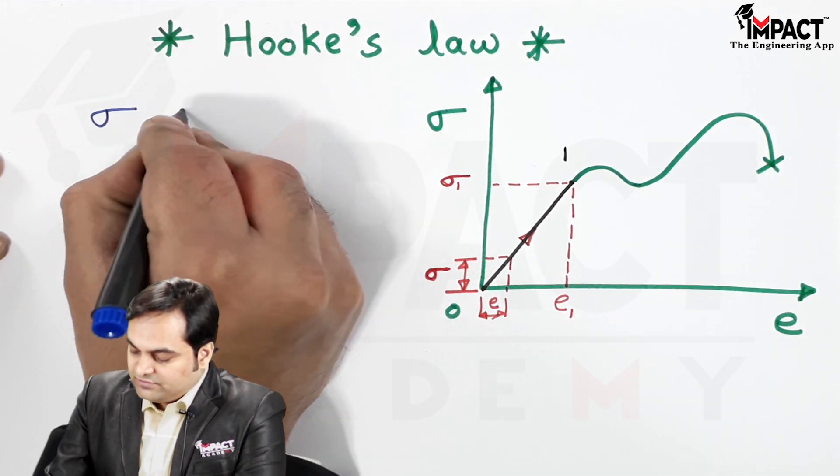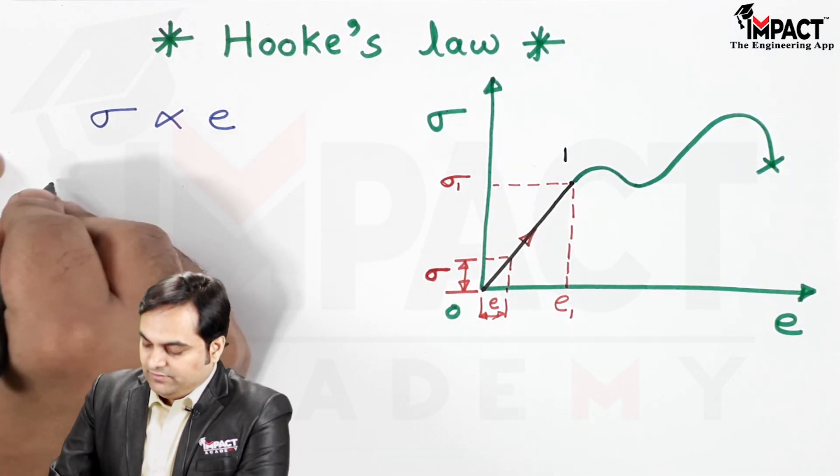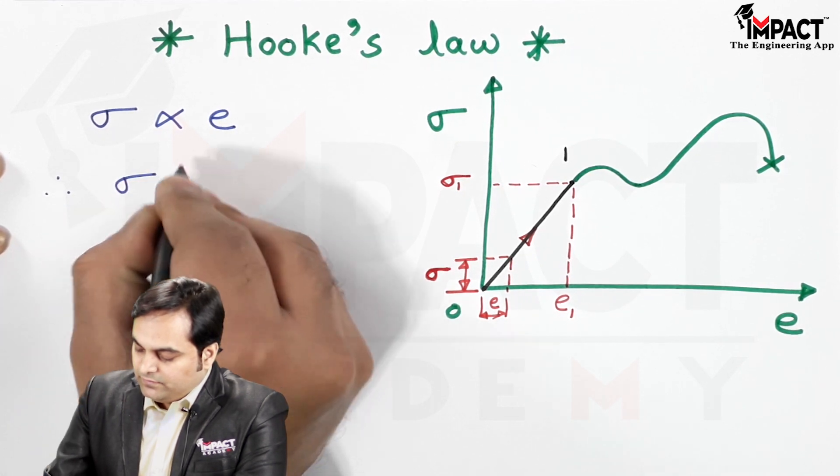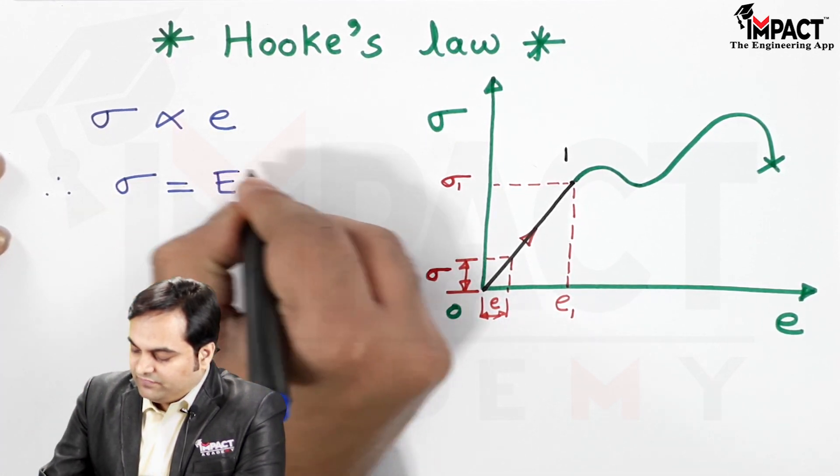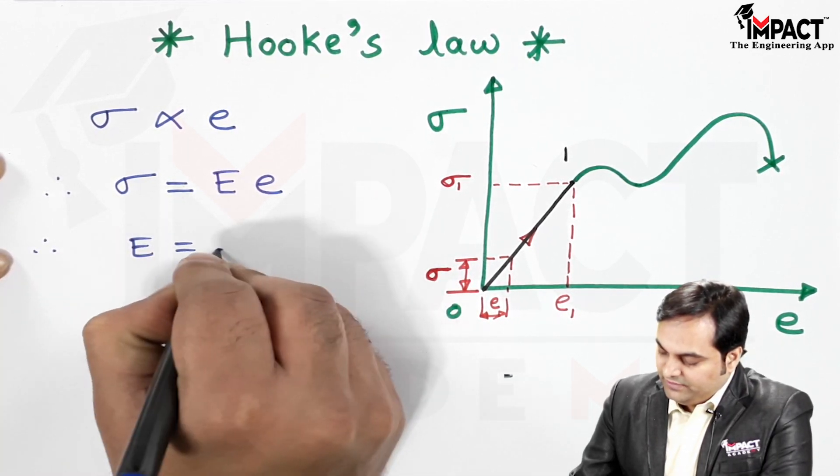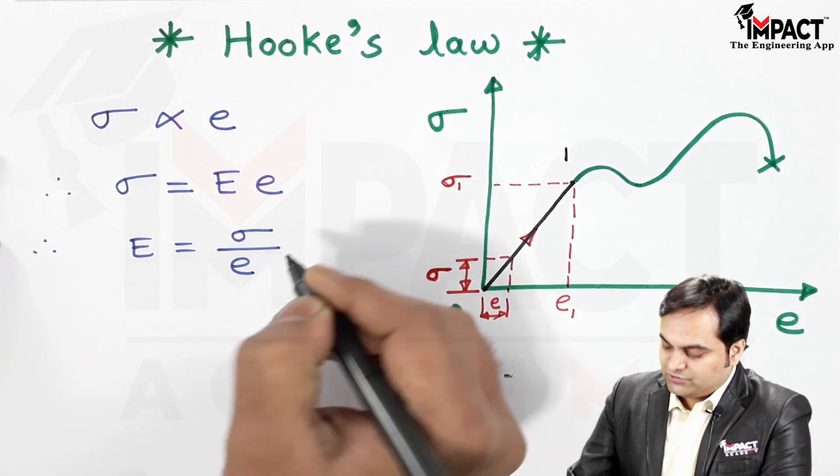So stress is directly proportional to strain, and therefore when I remove this proportionality sign, we have equal to and there is a constant. Therefore, E equals σ/e, or E = stress/strain.